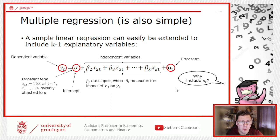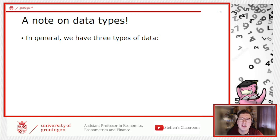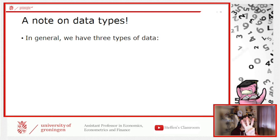We include the error term because we're assuming the relationship is not perfect. There are more reasons for this which we'll get to shortly. But first, let's take a step back and talk about data types.